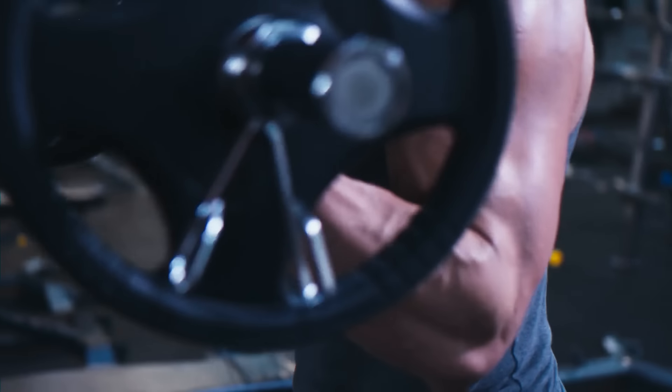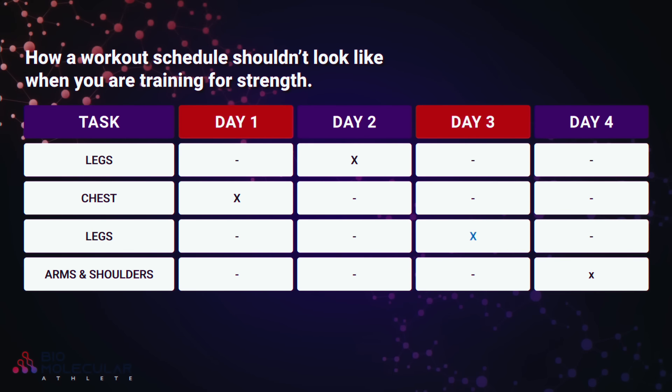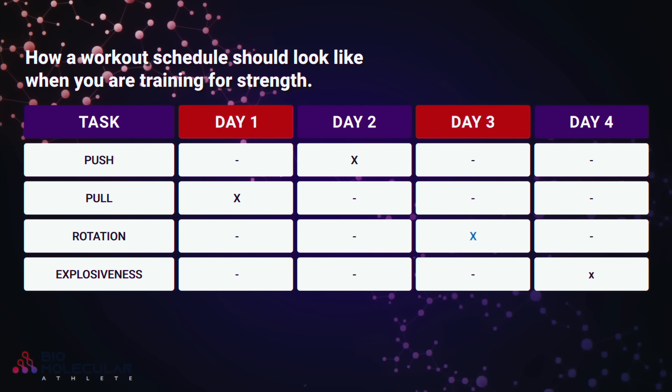In selecting compound movements, we generally want to think about exercise selection of movements rather than muscle groups. This is an important distinction. When people think about strength training, they tend to adopt bodybuilding concepts — going to the gym thinking 'I need to get my chest today' or 'I need to get my hamstrings.' For strength and power development, we want to think about movements rather than individual muscle groups — things like explosive hip extension, pushing, or pulling movements.